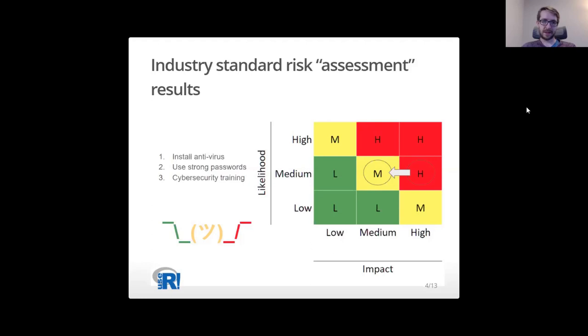Shown in this slide is such a risk matrix where risk scores are translated to words like high, medium, and low. Also in this slide is someone shrugging. This is to illustrate the very dubious nature of what I've just described.